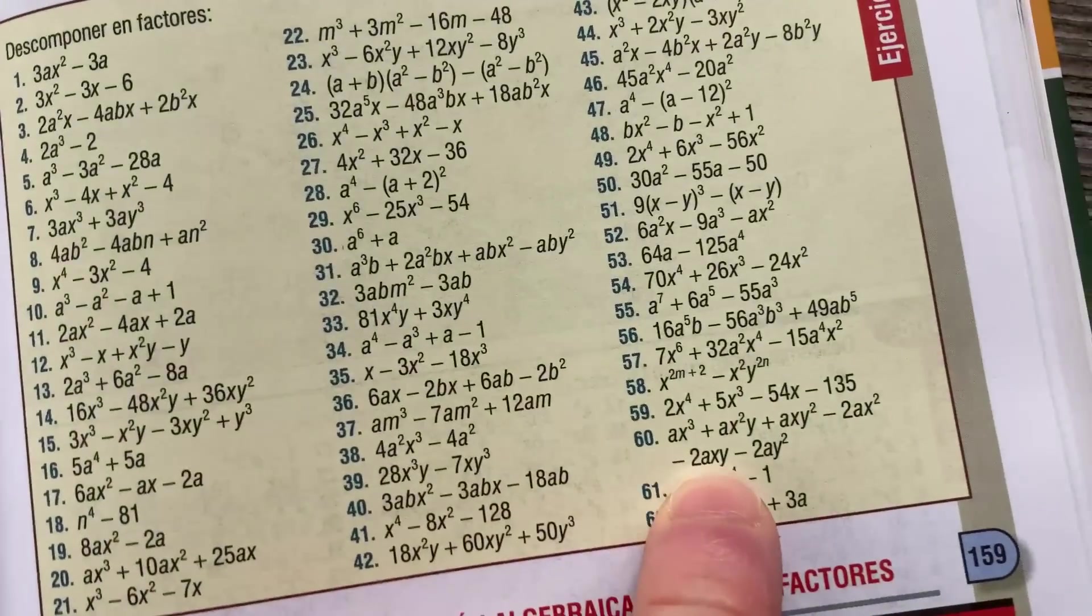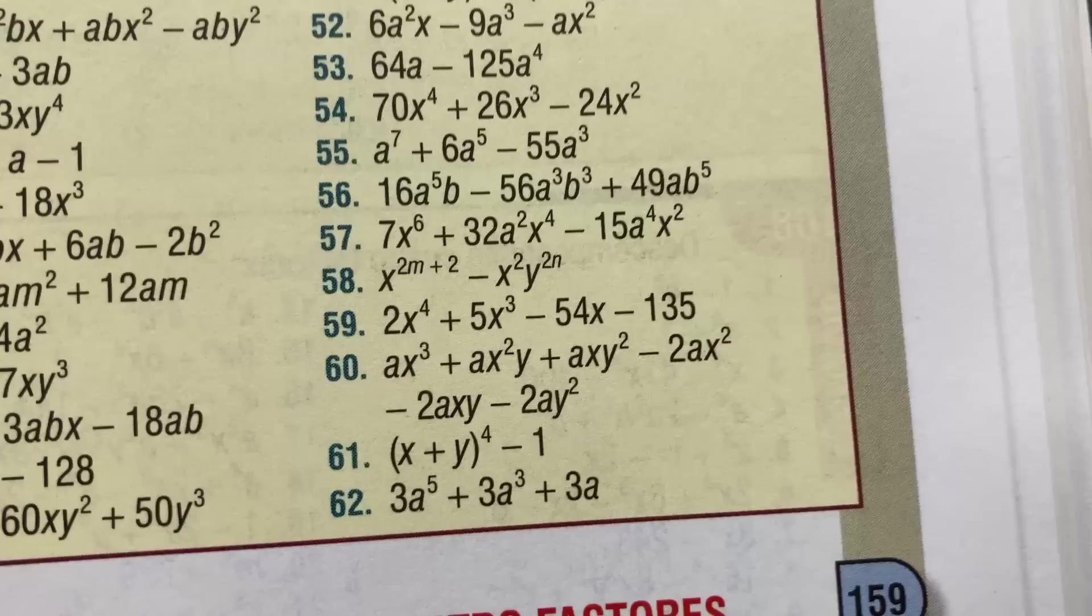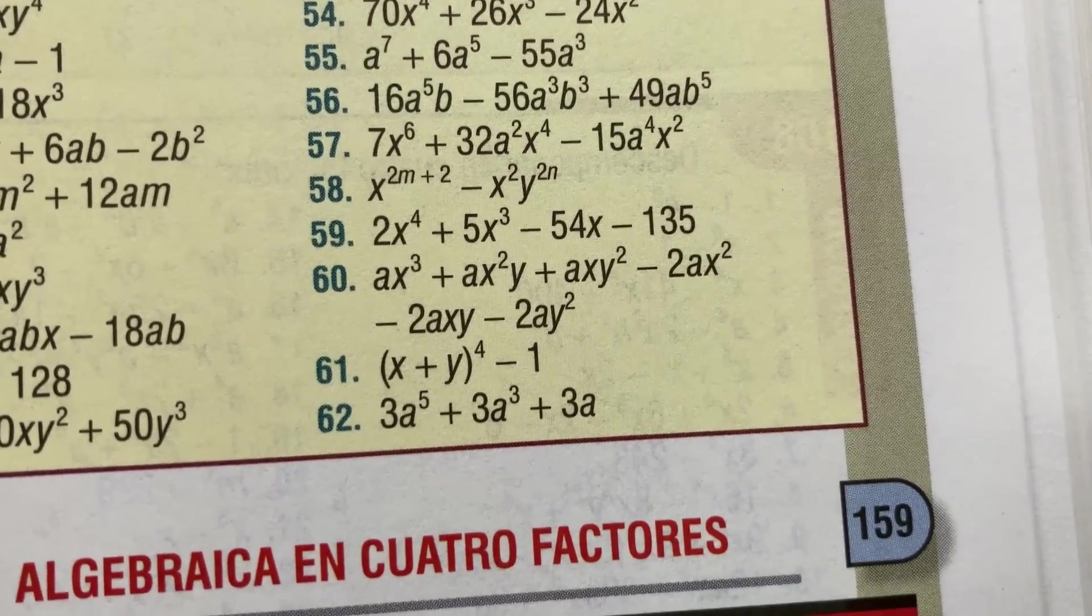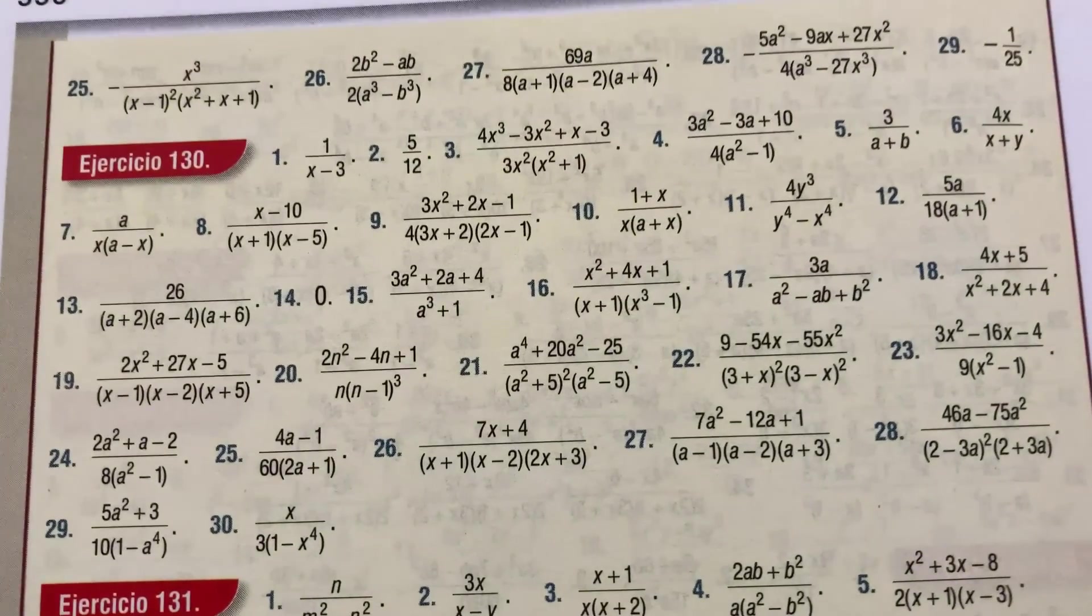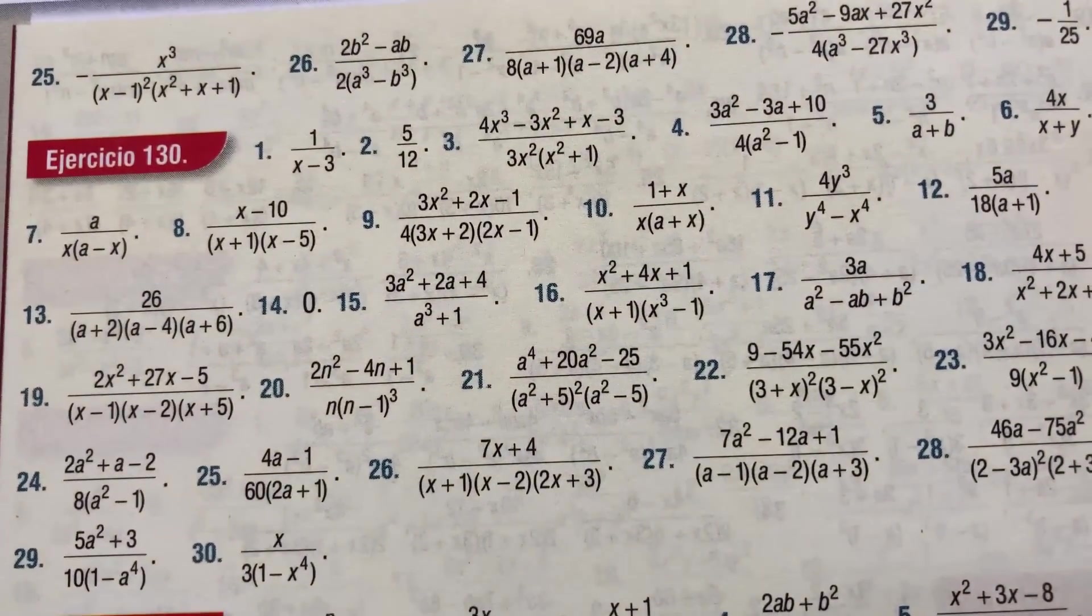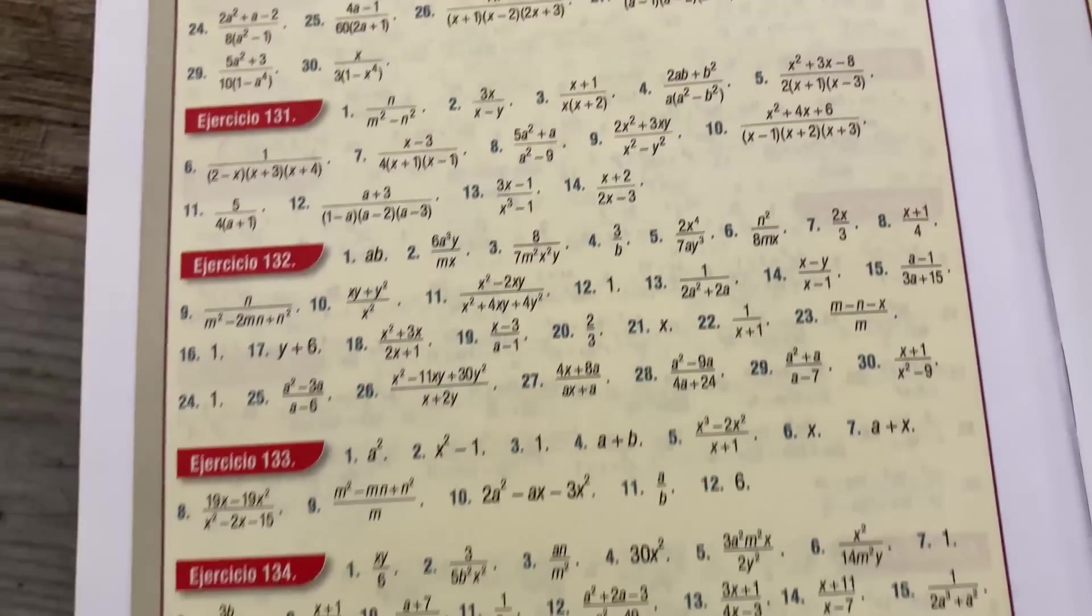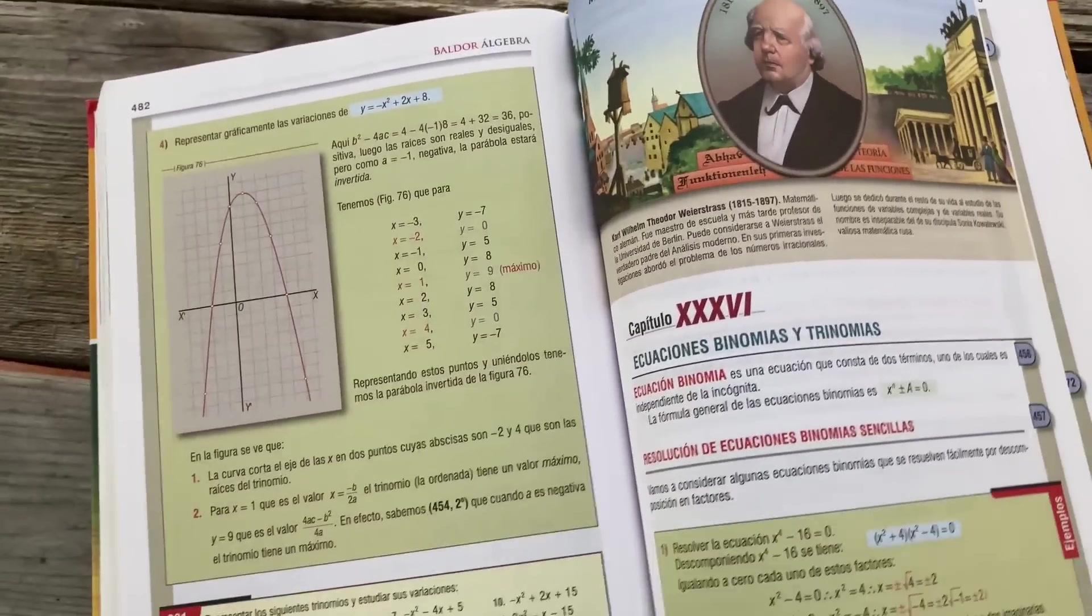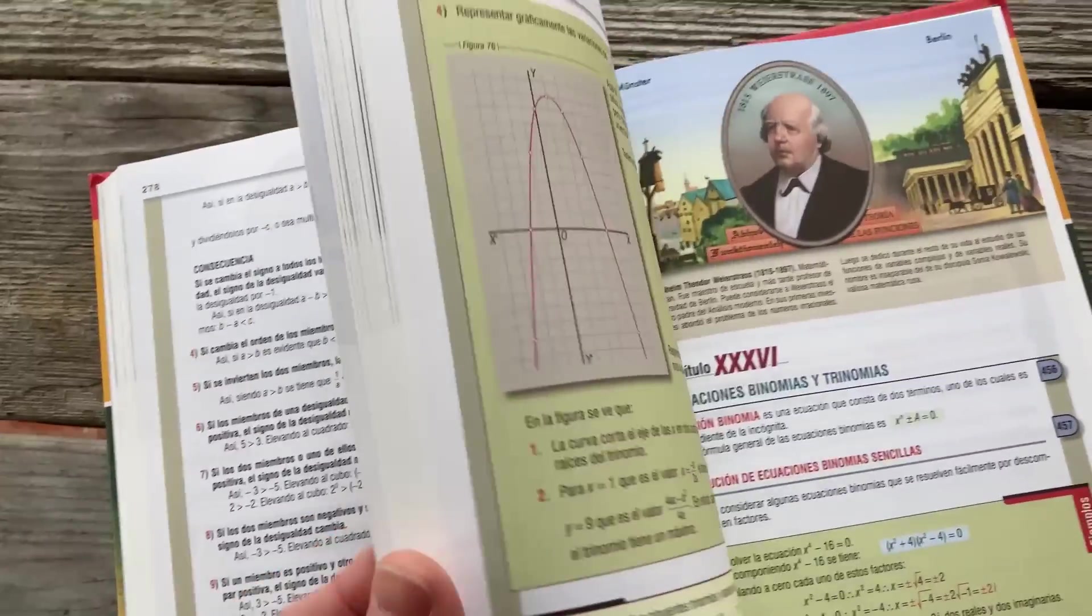Here we have 62 more problems. It's just completely insane. Notice the difficulty level—they're starting to get more challenging. Factoring like number 60 there, these problems are starting to get really tough. Here's a look at the answers. This book actually has answers to every single problem, which makes it amazing.